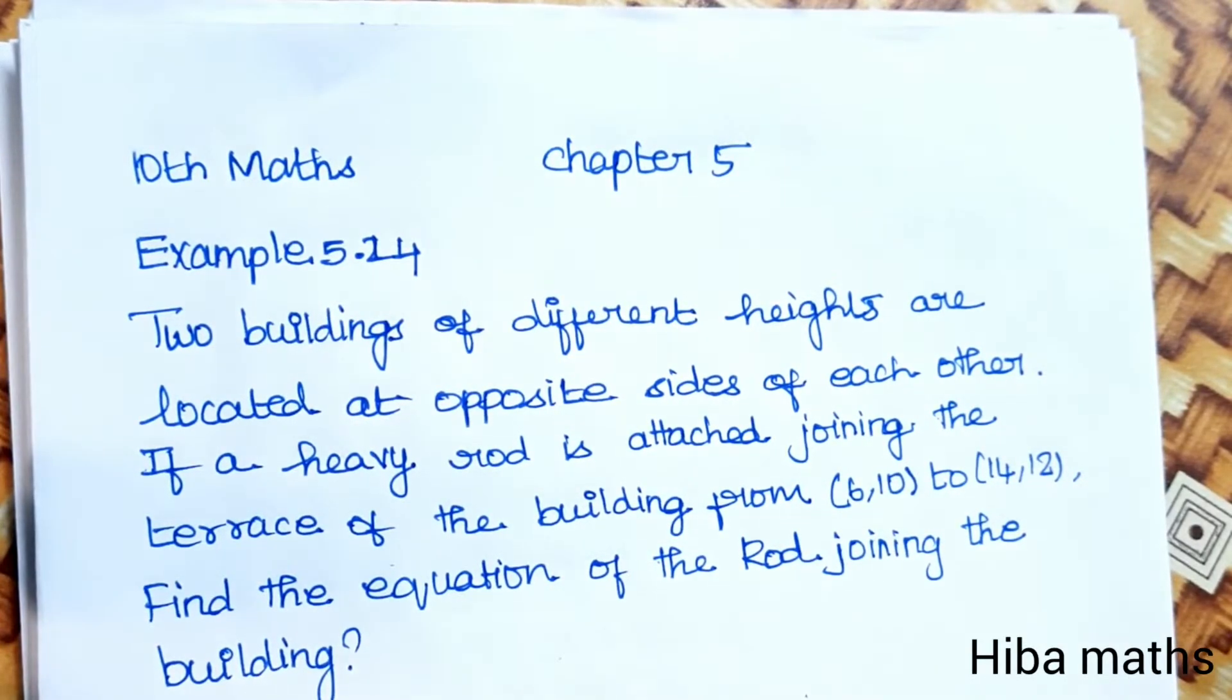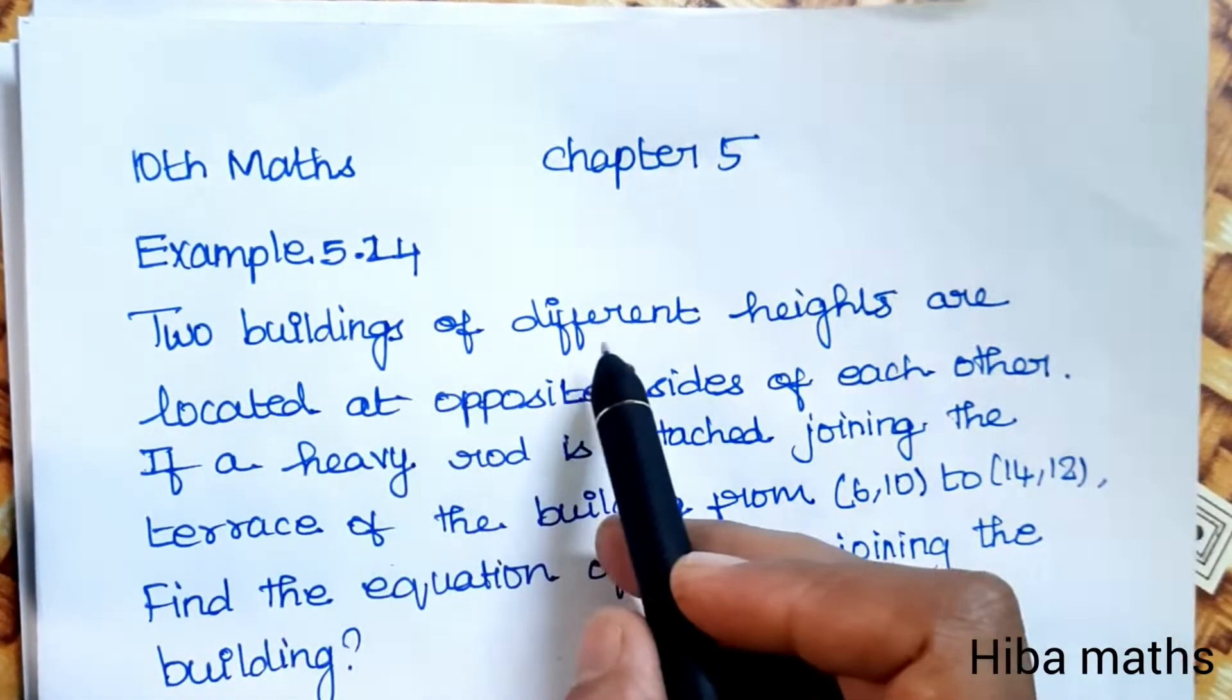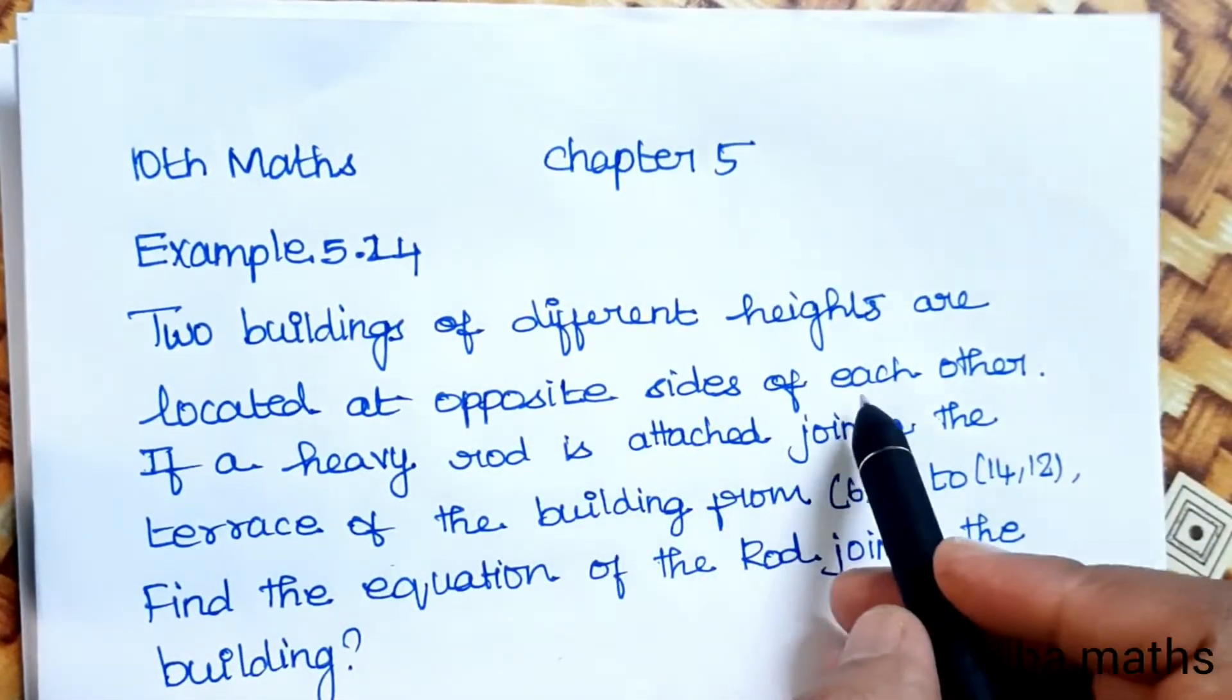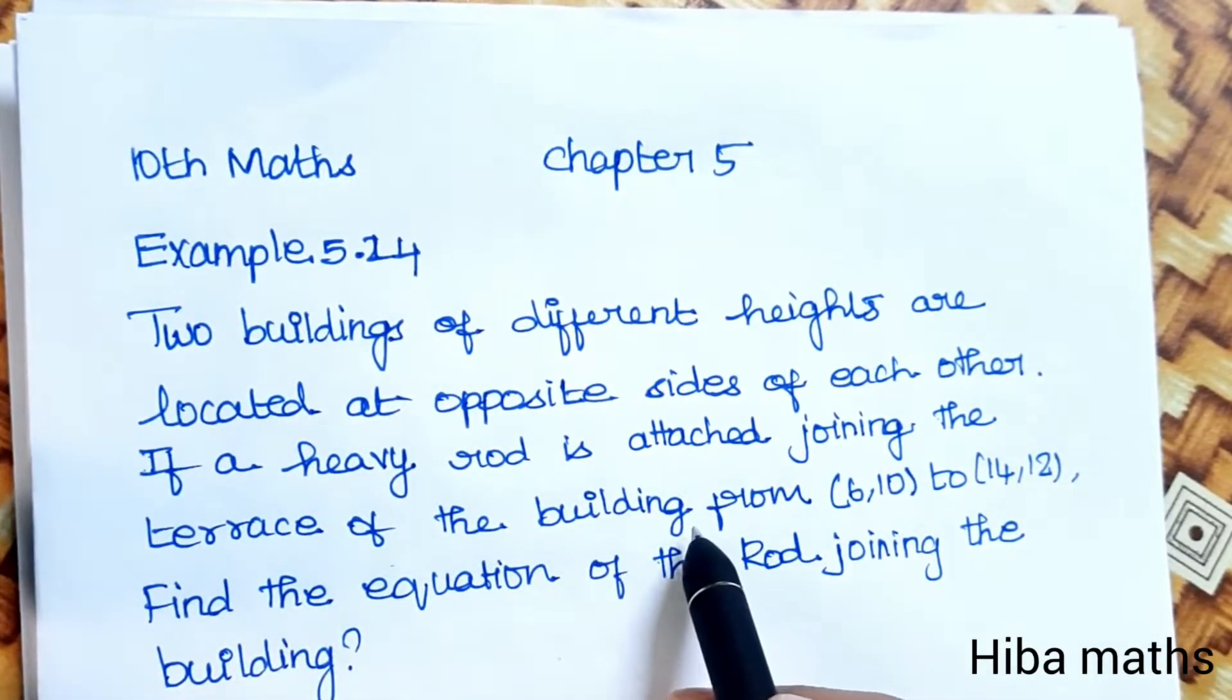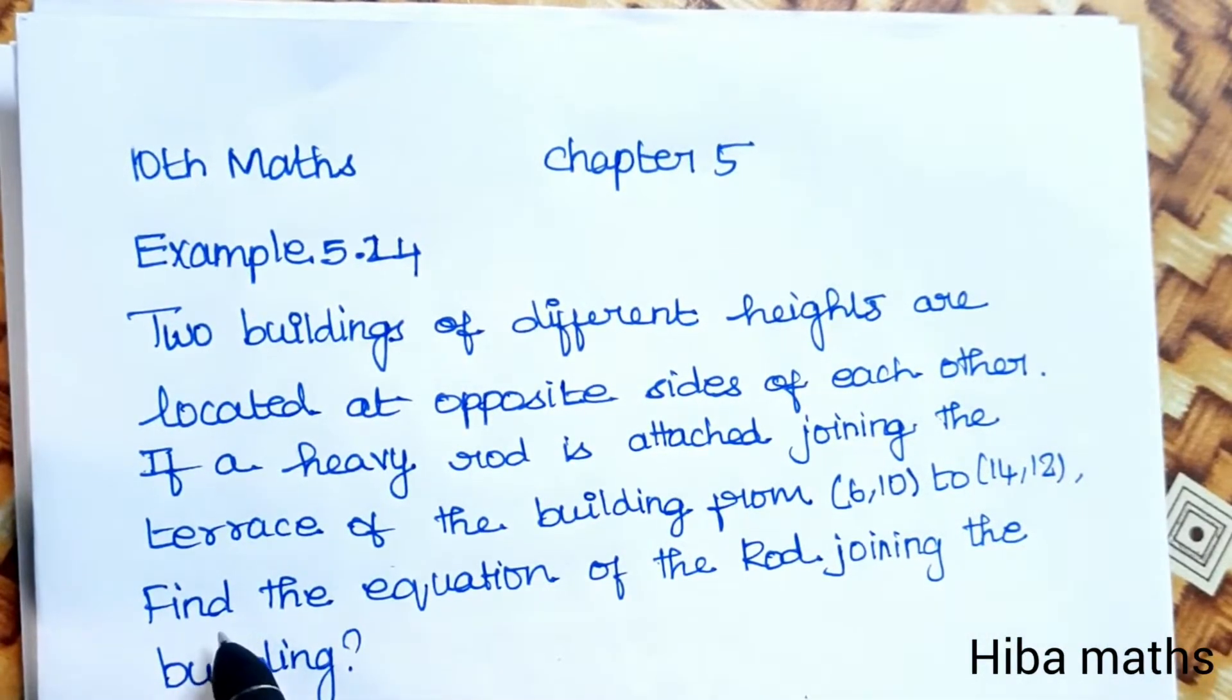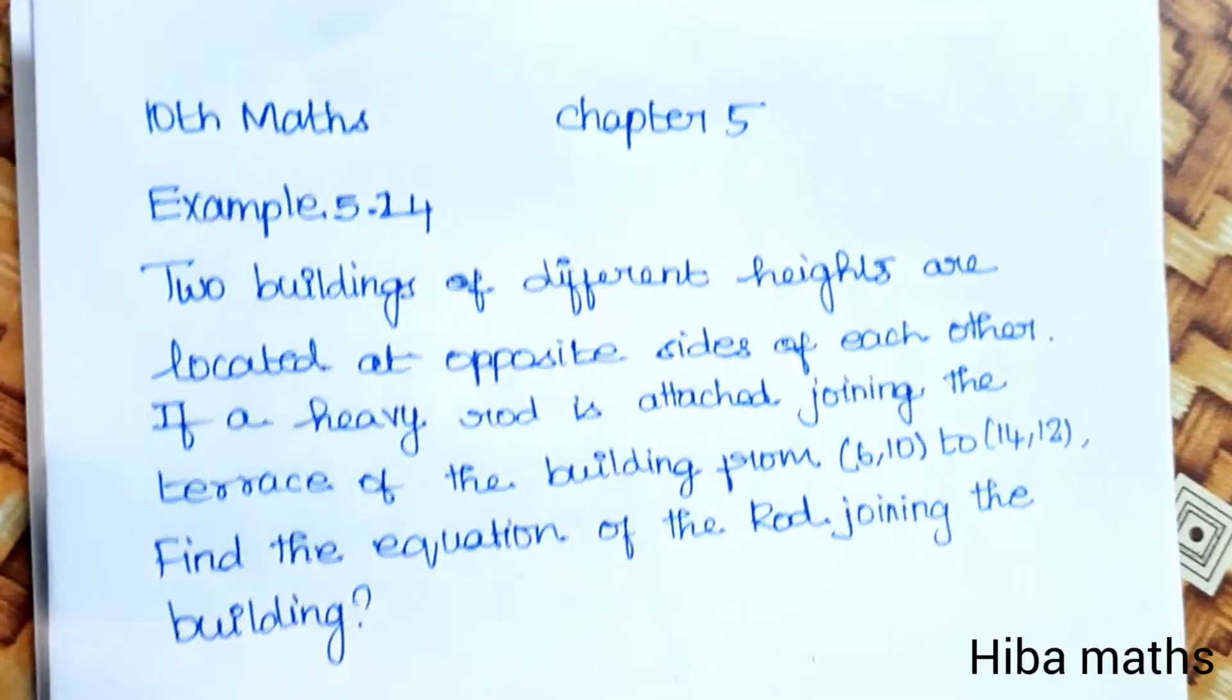Hello students, welcome to Hiba Maths, 10th Standard Maths, Chapter 5, Example 5.24. Two buildings of different heights are located at opposite sides of each other. If a heavy rod is attached joining the terrace of the buildings from (6,10) to (14,12), find the equation of the rod joining the buildings.